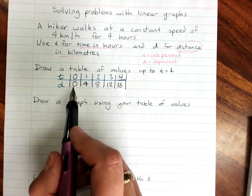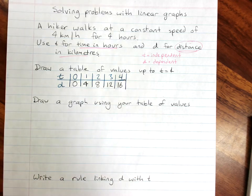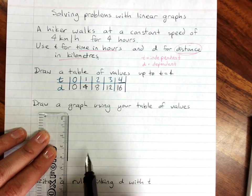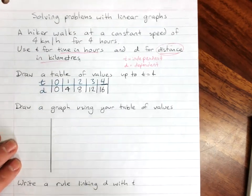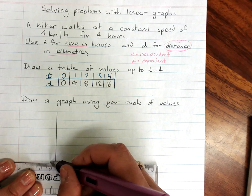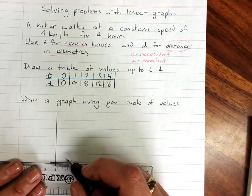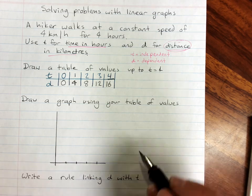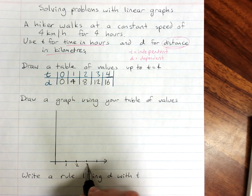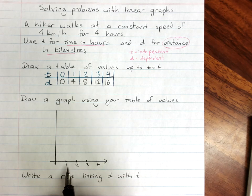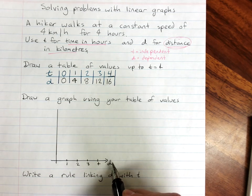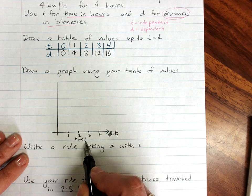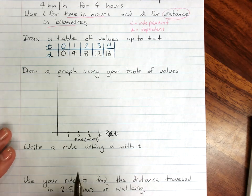So, we've drawn our table of values. Draw a graph using your table of values. Now you don't have to go all the way up to 16 in individual grid squares here. It's quite okay to have a different scale on the Y compared to the X. So, you label your graph if you can.